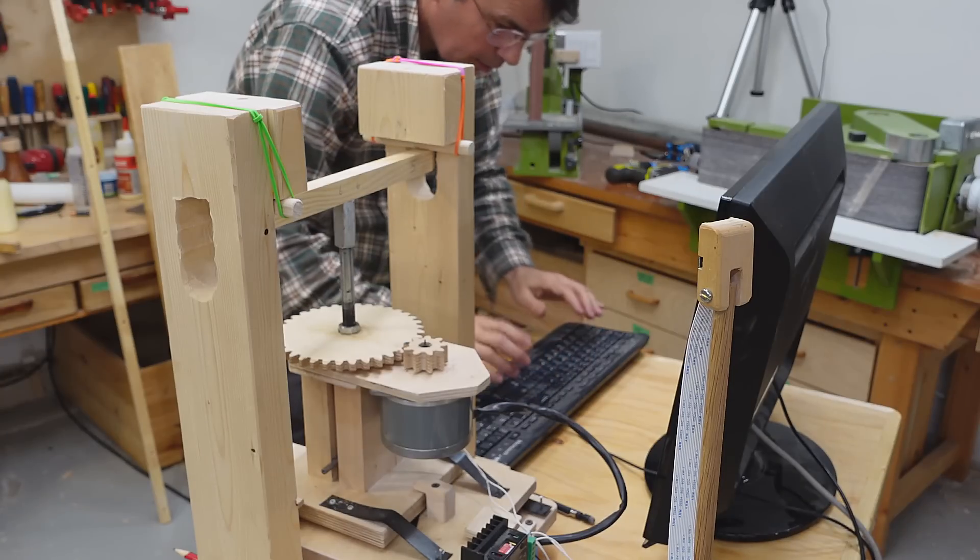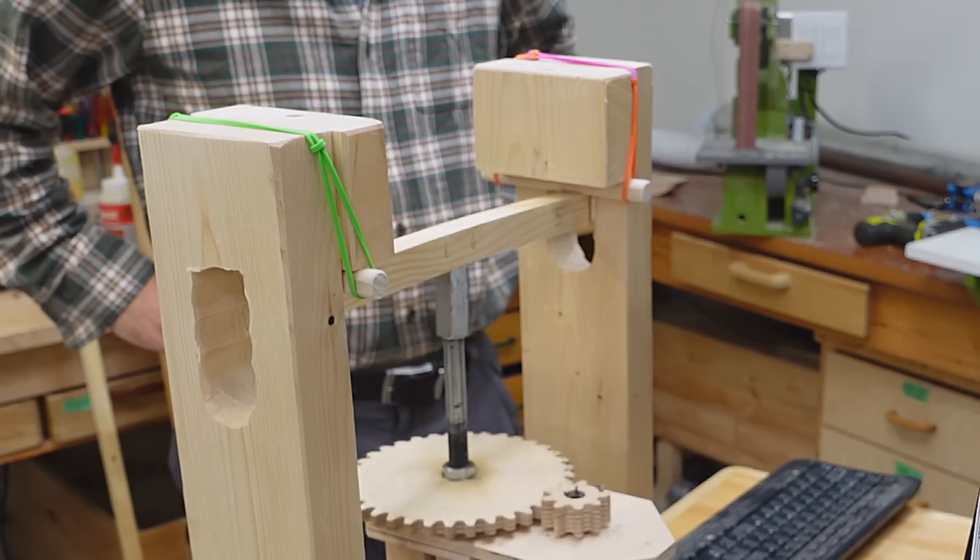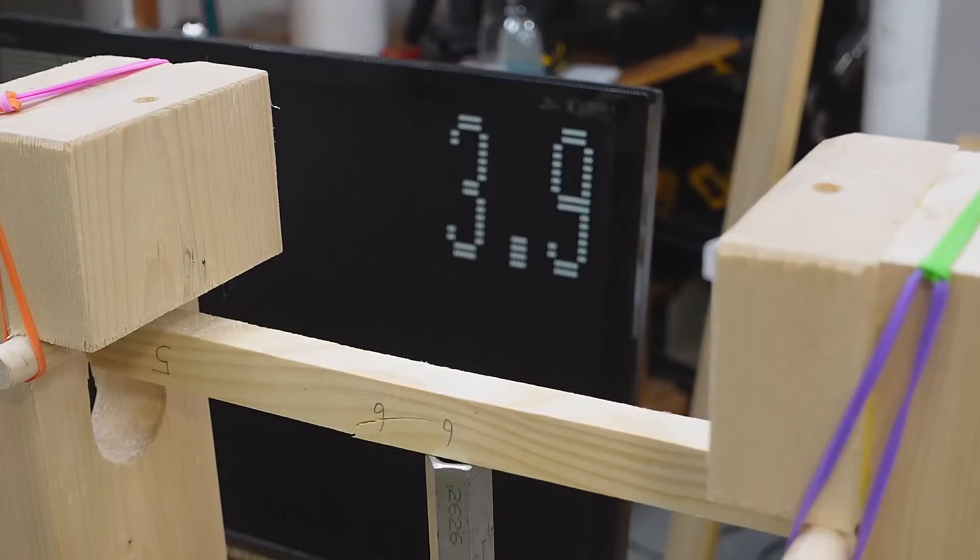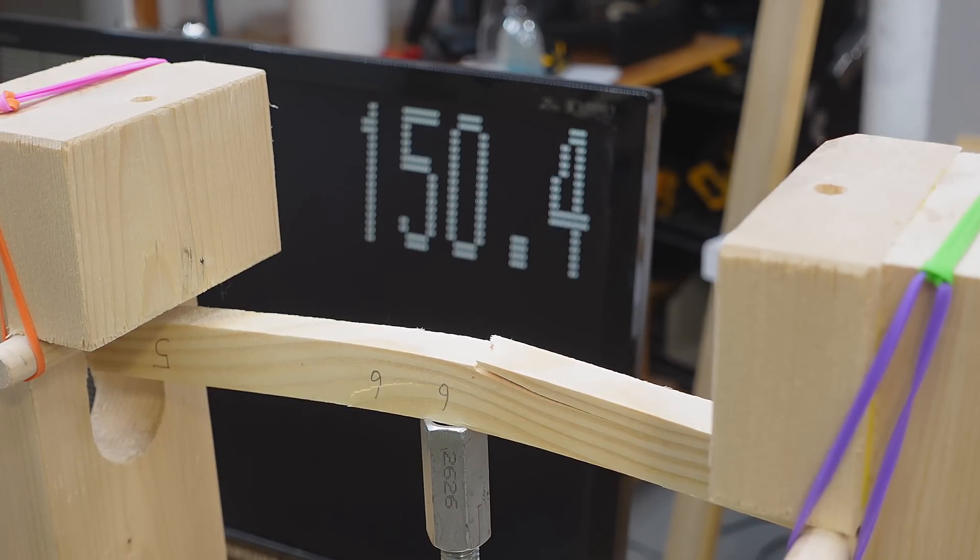This piece had the grain at kind of a funny direction and I didn't expect it to do well. It failed at just 109 kilograms but it wasn't broke all the way through, so I flipped it over and broke it from the other direction. At which point it went up to 151 because the grain was a bit better going that way.